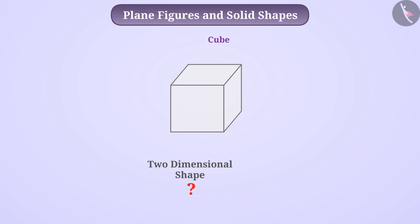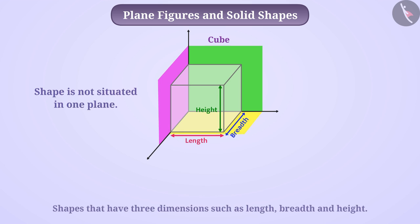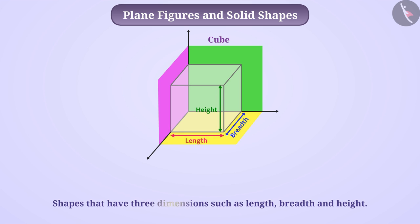We see that it has three dimensions: length, breadth and height. Being three measurements or three dimensions, this shape is not situated in one plane but it occupies space in different planes. Shapes that have three dimensions such as length, breadth and height are called solid shapes or three-dimensional shapes. In short, these are also called 3D.